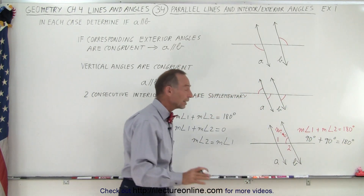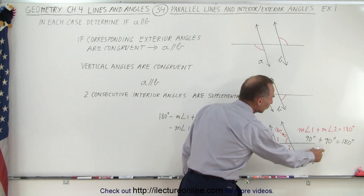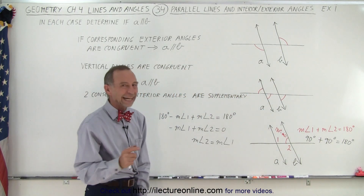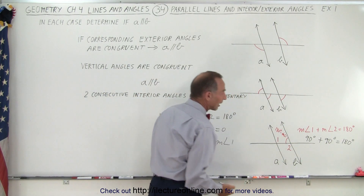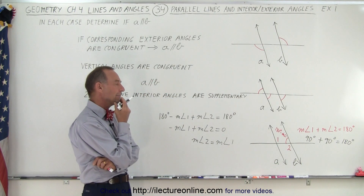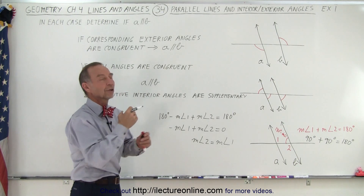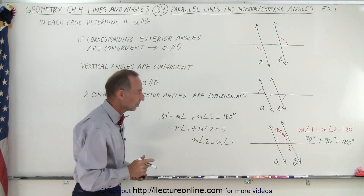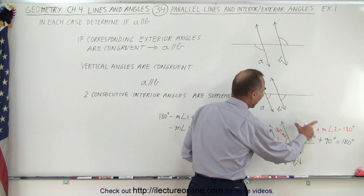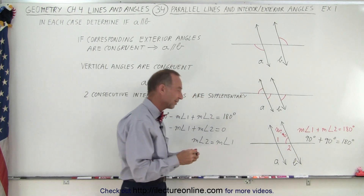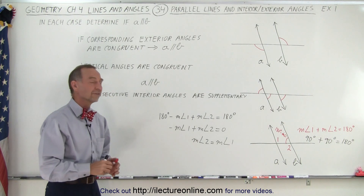So the only way this could be true is if angle one and angle two are each 90 degrees. But clearly you can see that that's not the case for angle one and it's not the case for angle two. So we cannot conclude that those two lines are parallel from the information given — the information is not consistent with the two lines being parallel.